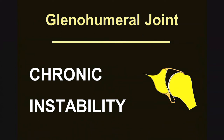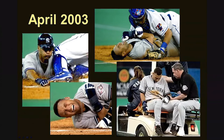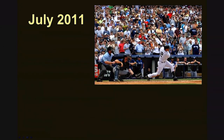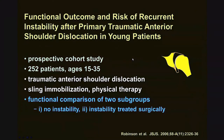Let's go on to the last of the three major topics: chronic instability. Here's Derek Jeter sliding into home, with a knee pushed into his left shoulder — he was diagnosed with left glenohumeral dislocation in April 2003. By July 2011, Jeter is back on the field hitting a home run for his 3,000th hit. So dislocation does not always mean the end of an athletic life. However, depending on your age, it can mean a predisposition for repeat dislocation and the development of chronic instability.